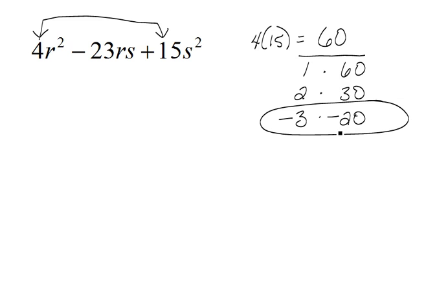We're going to use this to rewrite that middle term. So I'm going to write 4r² but instead of -23rs I'm going to use -3rs and -20rs plus 15s².